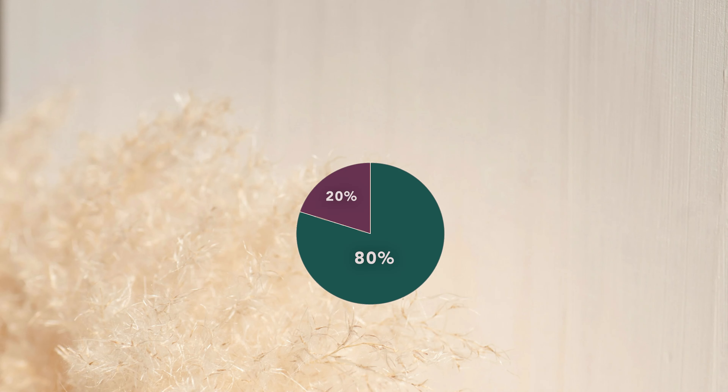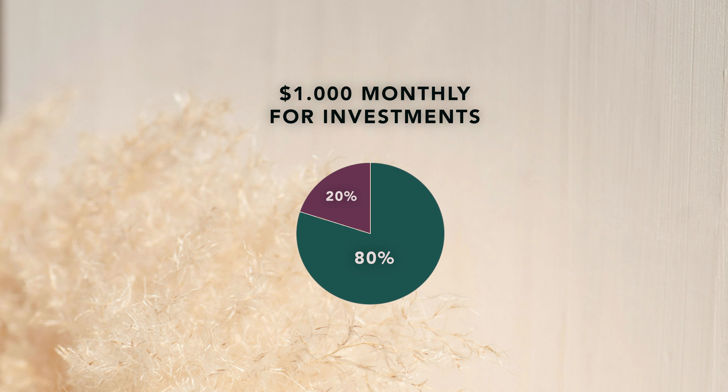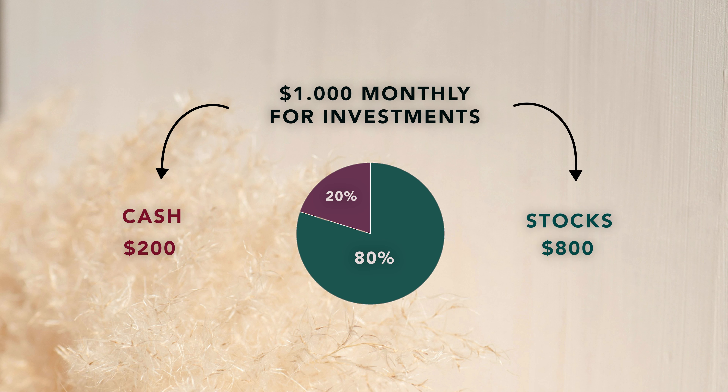Another example: maybe you've been in a wealth-building phase, but suddenly you get a huge payout from selling your business. Then you might switch from building wealth to preserving wealth and adapt your asset allocation immediately. Once you've settled your allocation — say an 80-20 — and you have $1,000 to invest each month, you keep $200 in cash and invest $800 into the stock market.